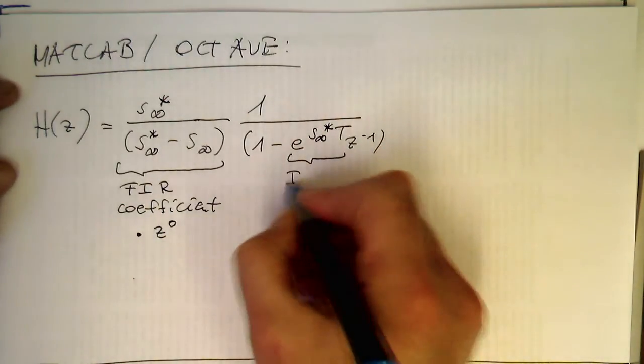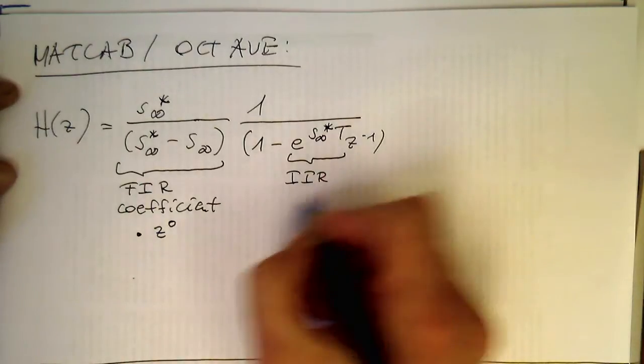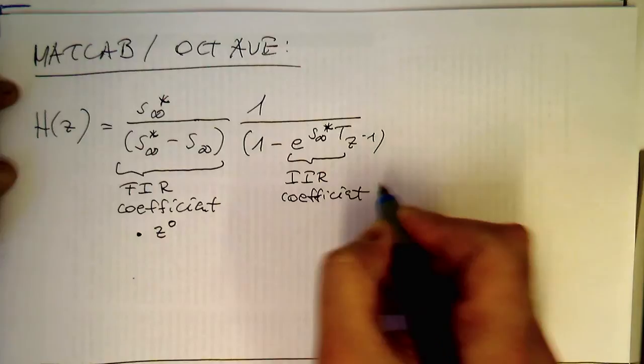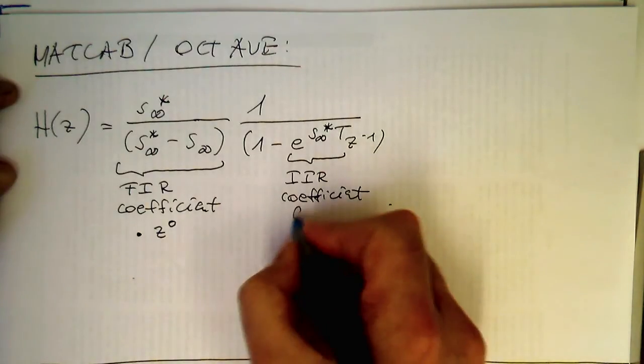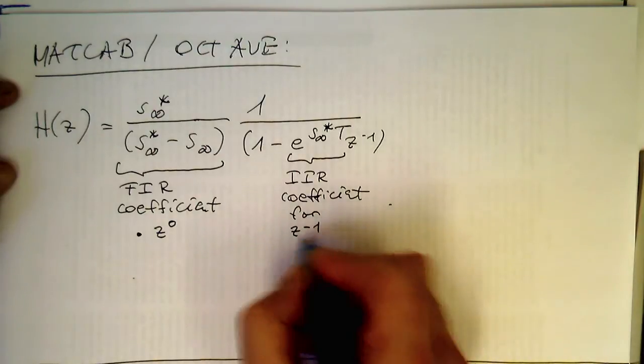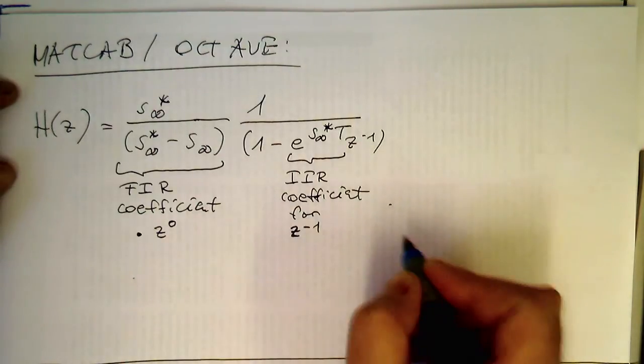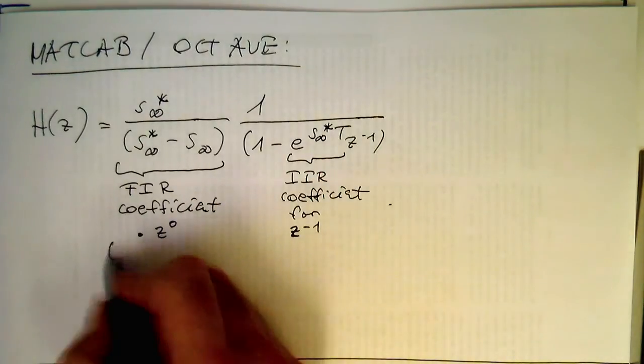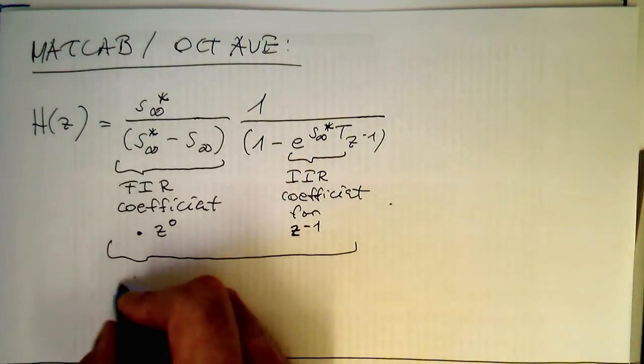So this becomes an IIR coefficient for Z to minus one. You also remember in the data flow diagram. And so this here essentially gives us one filter command.